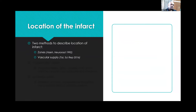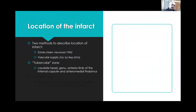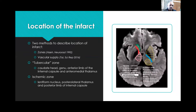There are two methods to describe the location of the infarct. The first is by zones and the second is by vascular supply. Two zones have been described: the tubercular zone and the ischemic zone. The tubercular zone includes the caudate head, the genu, the anterior limb of the internal capsule, and the anterior medial thalamus. The ischemic zone predominantly involves the basal ganglia — the putamen, posterior limb of the internal capsule, and the posterior lateral thalamus. Most infarcts occur in these two zones.